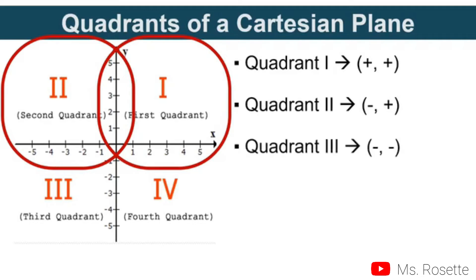Then for quadrant 3, both coordinates are negative. As you can see in the figure, this part, the horizontal part of the third quadrant is negative, and the vertical part is also negative.